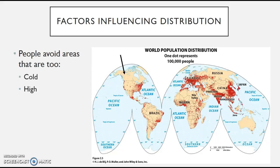People also tend to avoid living in places that are too high — for example, the Rocky Mountains. Areas that are too cold and too high can overlap, since it gets colder as you go higher into the mountains. But there are lots of cold areas that aren't high, so it's important to draw a distinction. High mountain areas also have thinner air, rockier soil, and are generally much harder to live in.